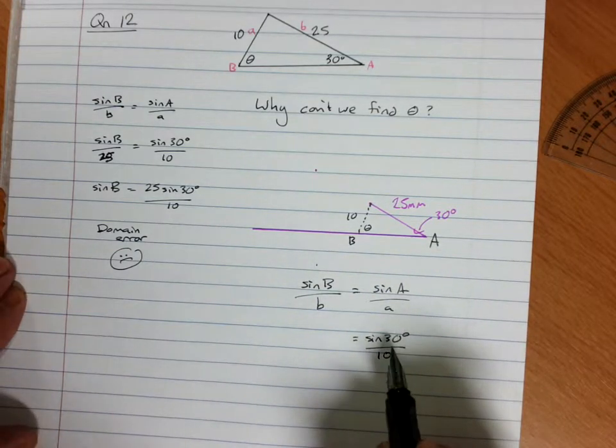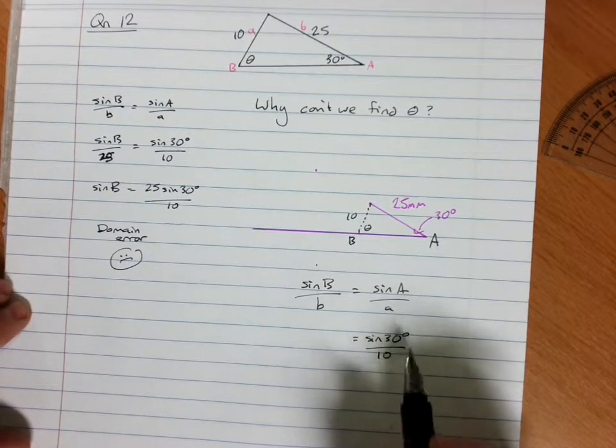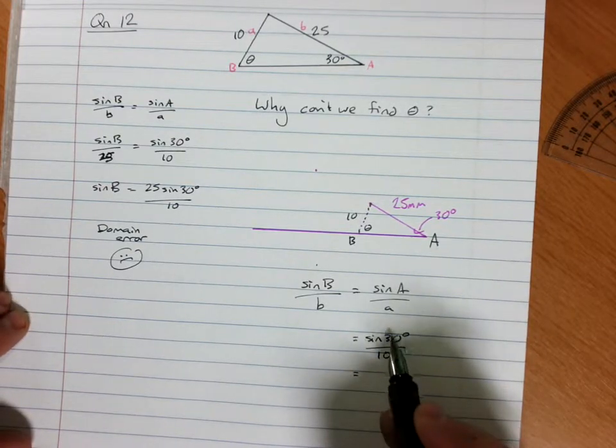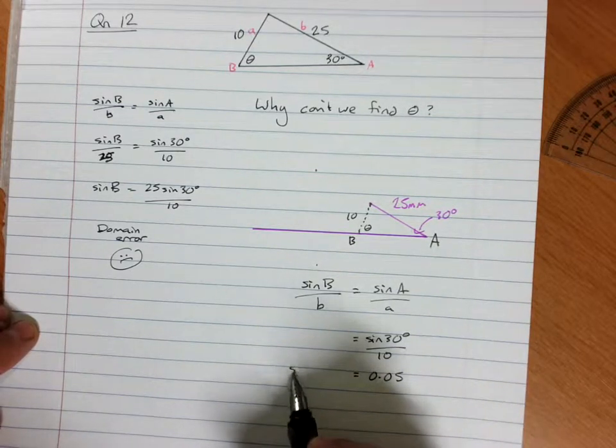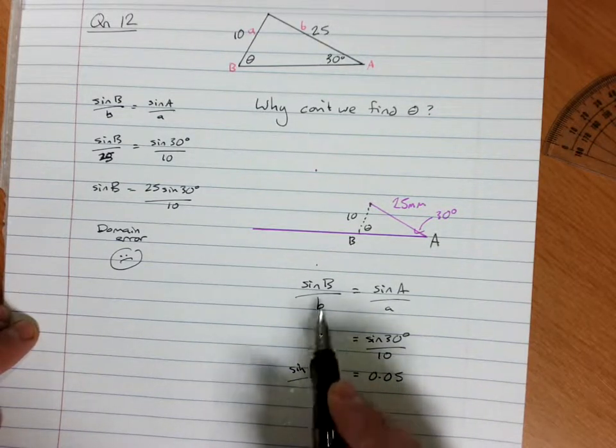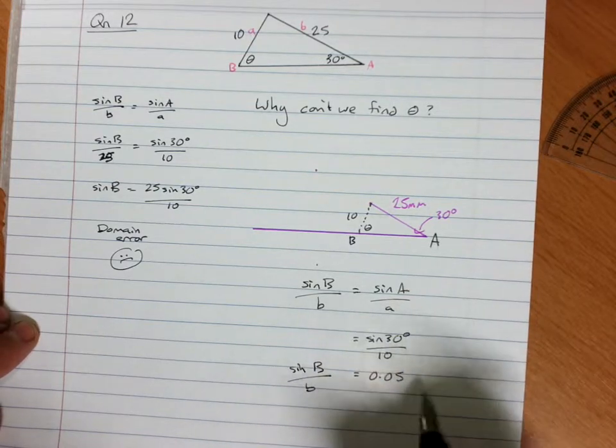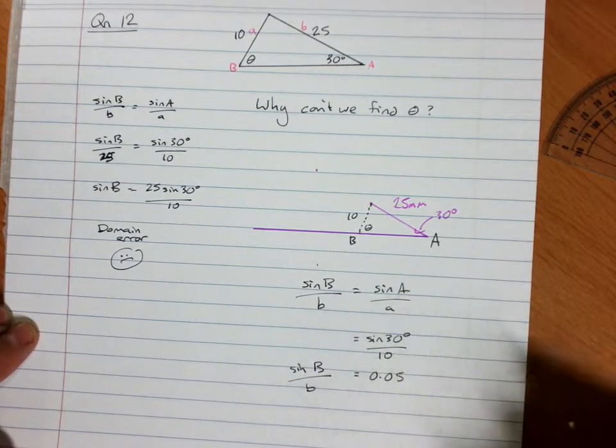Now, sine of 30 degrees, if you remember your exact values, that's 0.5. So I've got 0.5 divided by 10, which is 0.05. Sine B on B is 0.05. So far, I don't see anything weird happening.